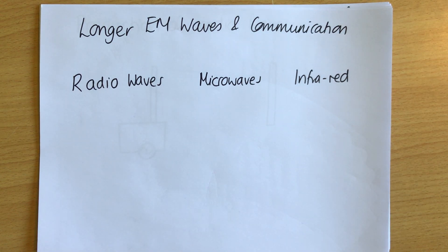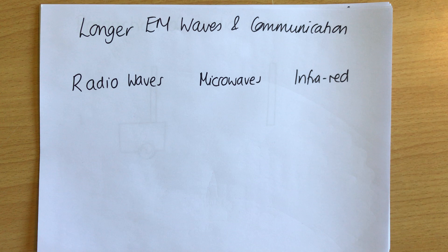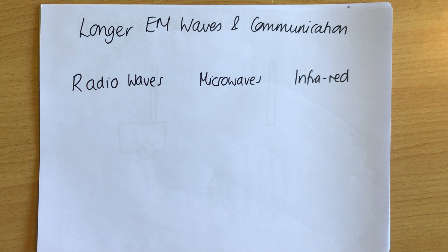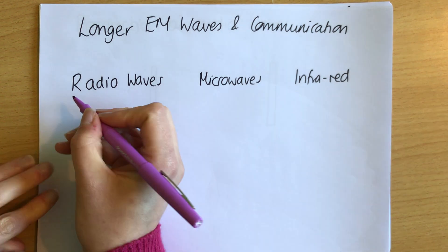In this video we're going to look at the longer wavelengths of electromagnetic waves: radio waves, microwaves, and infrared, and how they're used for communication, focusing mainly on radio waves and microwaves. All three are overwhelmingly used for either communication purposes or cooking and heating purposes, and we'll look at that in a separate video. Right now we're going to look at the communication purposes and think about each of these three.